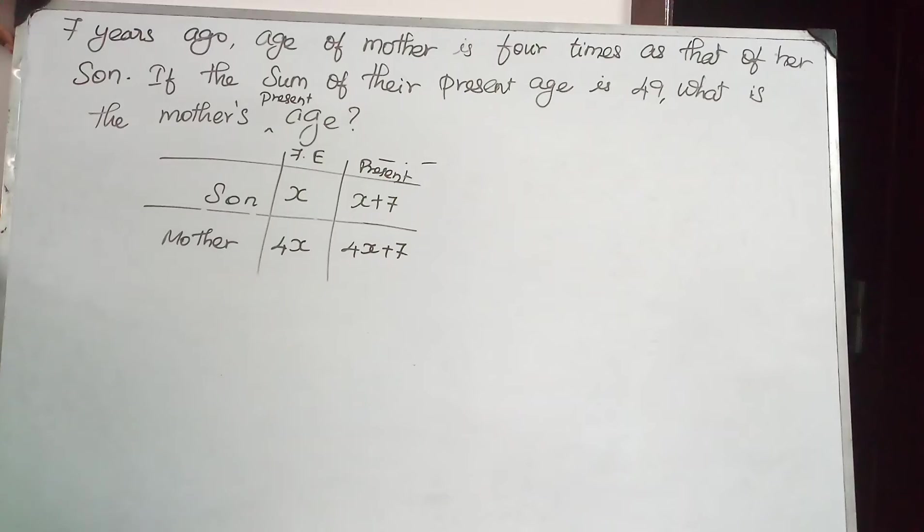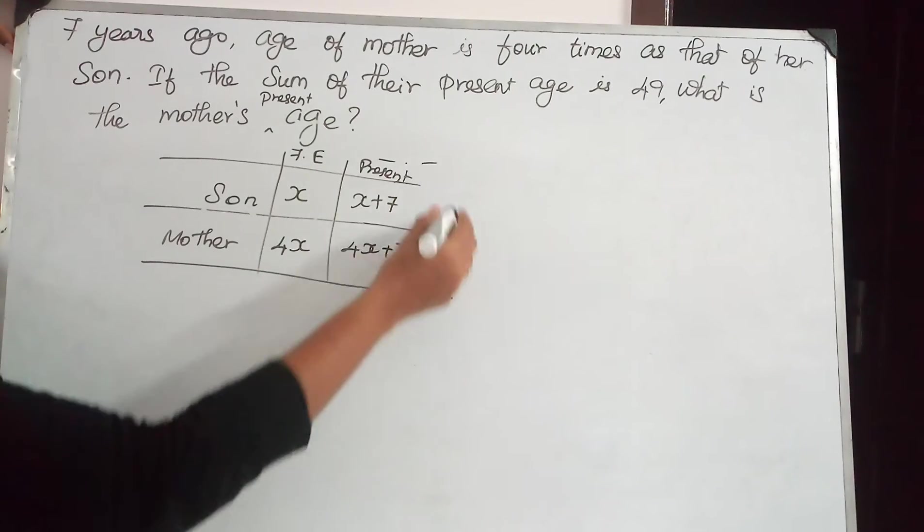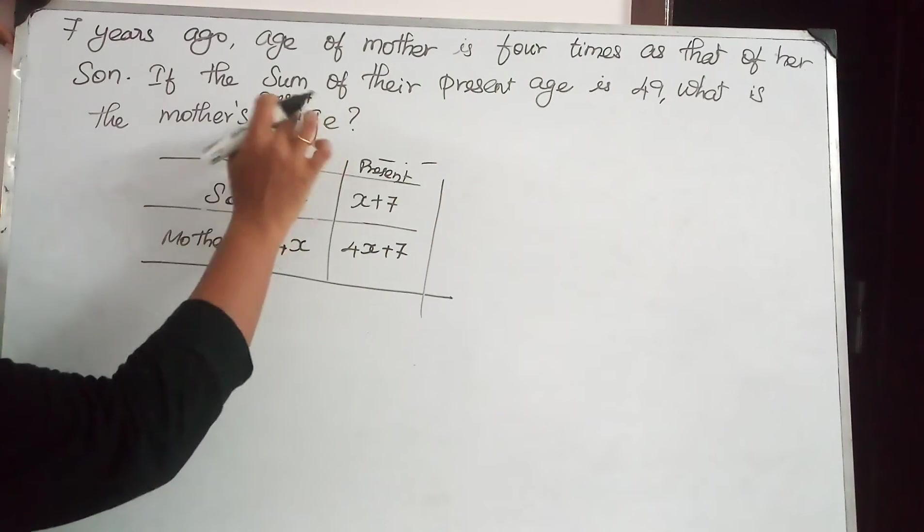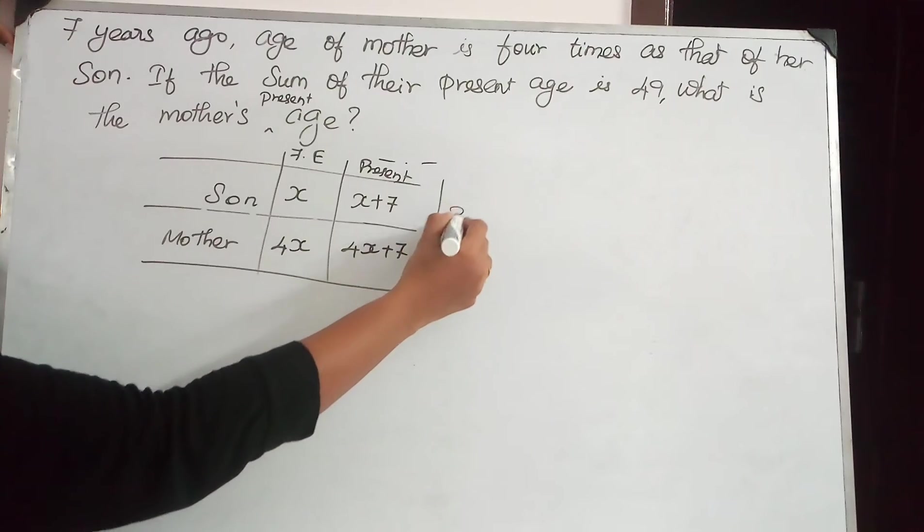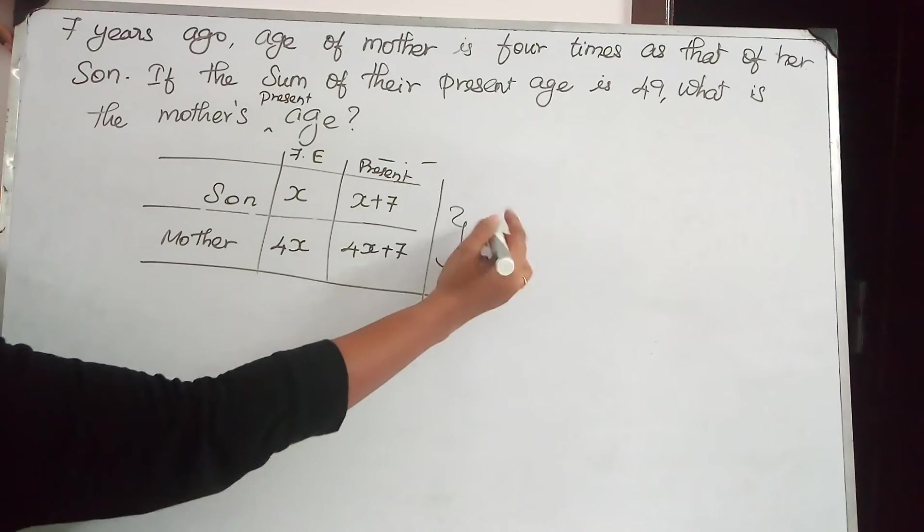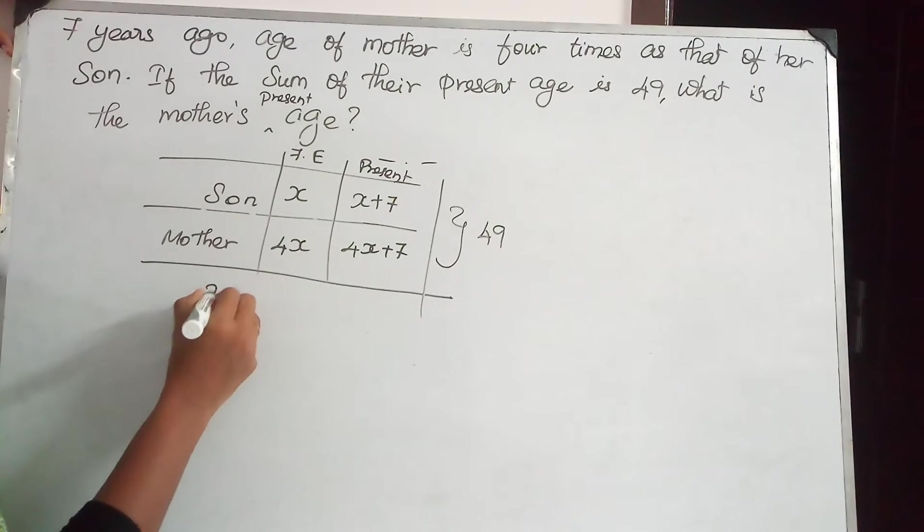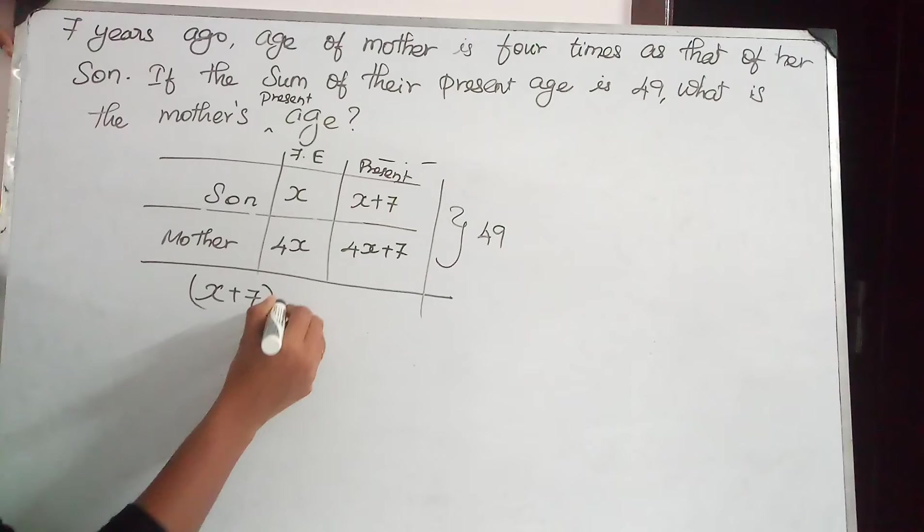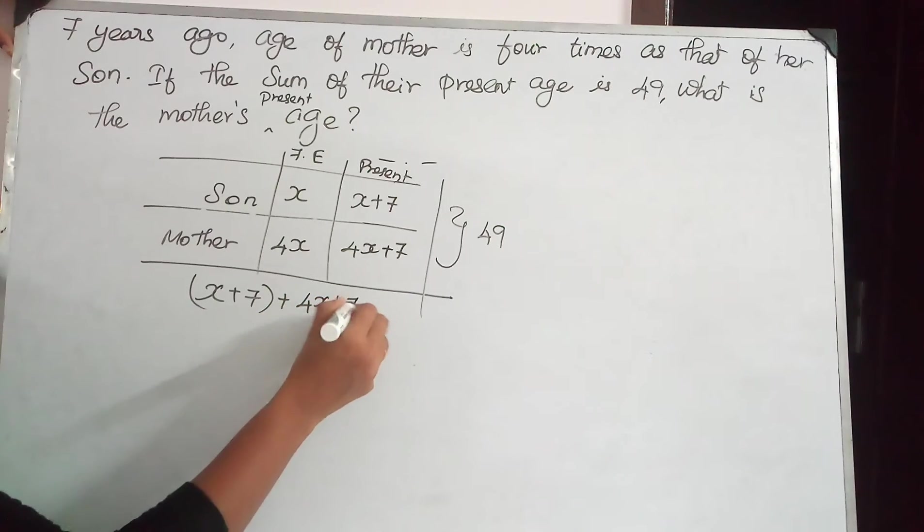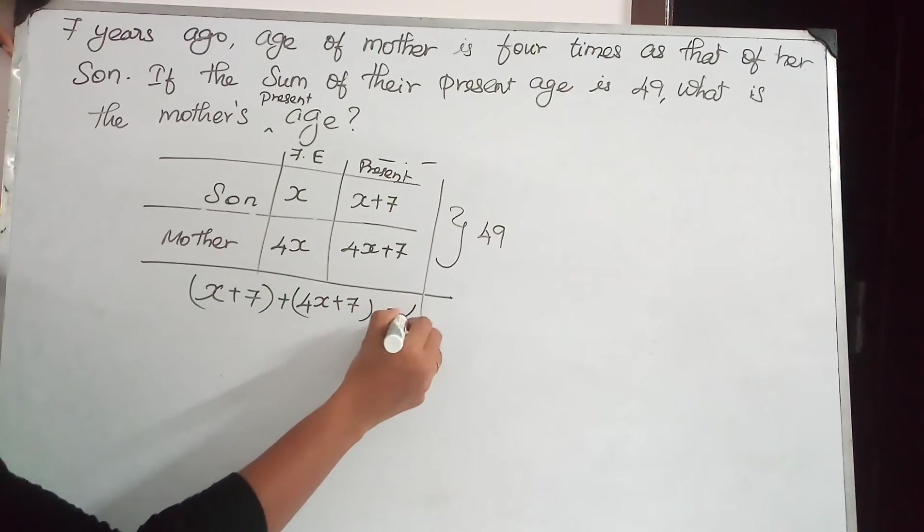Here in this case, they have given another condition. The sum of their present age is 49. If we add these two, we will get 49. So what we have to do? X plus 7 plus 4X plus 7 is 49.